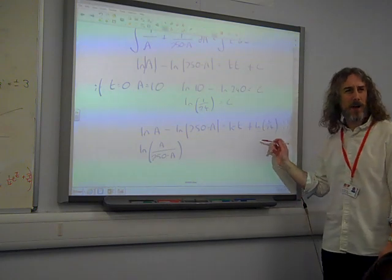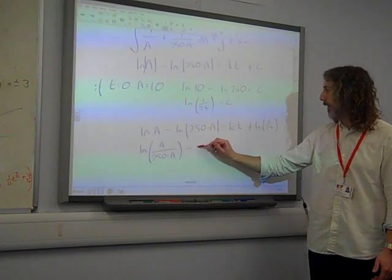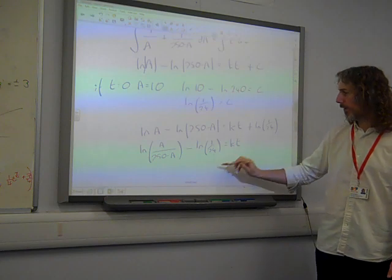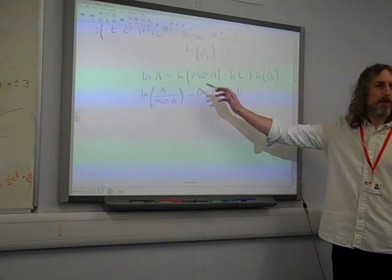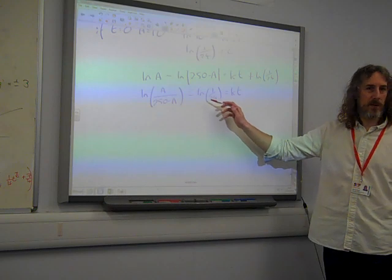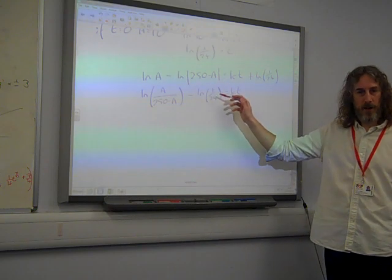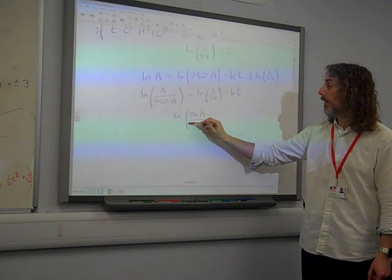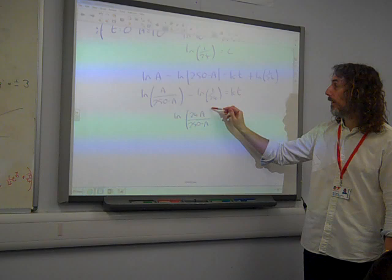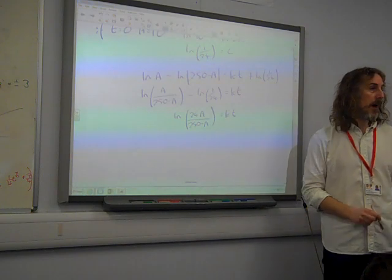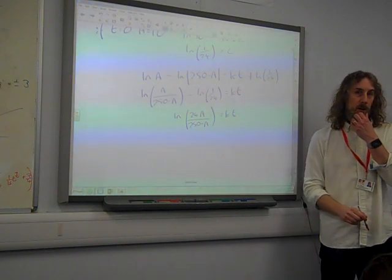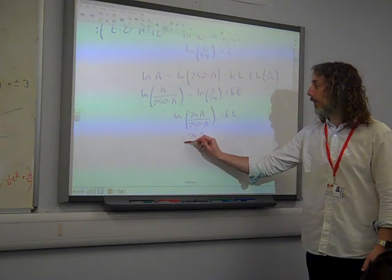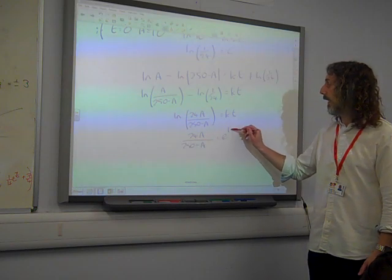We've got natural log of a over 250 minus a. Actually, shall we bring that in as well at this point? So that minus the natural log of 1 over 24. This minus ln 1 over 24, that's if we take the minus up to the power there. We'll make it reciprocal there. So that is times ln 24. So this is the natural log of 24a over 250 minus a is kt. Now we're ready to get rid of the logarithms. So we raise both sides as power e. 24a over 250 minus a is e to the kt.